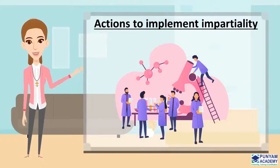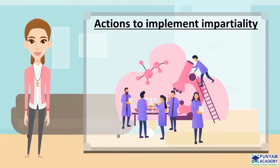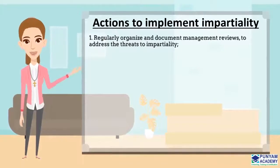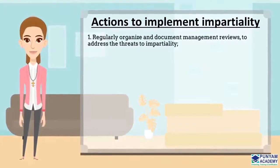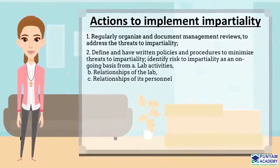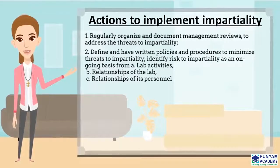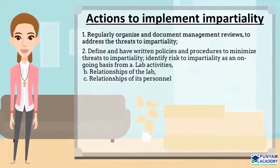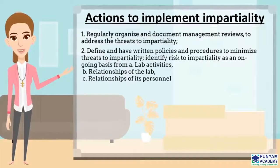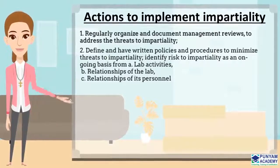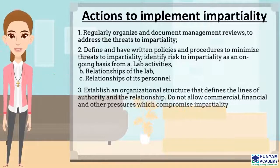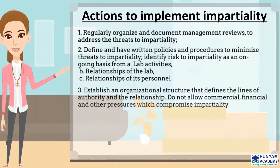Now let's discuss actions that you need to take to put impartiality into practice. (1) Regularly organize and document management reviews to address the threats to impartiality. (2) Define and have written policies and procedures to minimize threats to impartiality. (3) Identify risk to impartiality on an ongoing basis from: (a) lab activities, (b) relationships of the lab, and (c) relationships of its personnel. Establish an organizational structure that defines the lines of authority and the relationship.